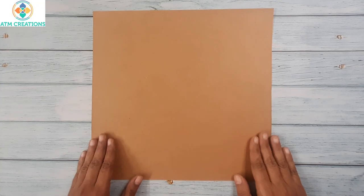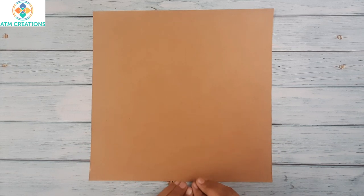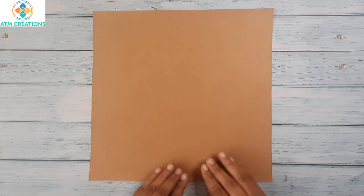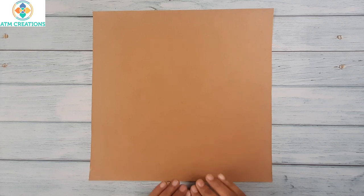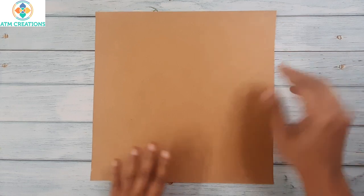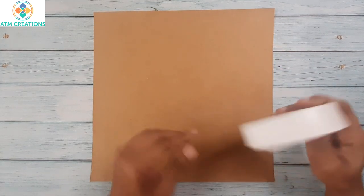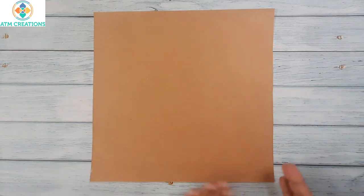Hello everyone, I welcome you all to ATM Creations. In this video I'm going to tell you how anybody can do an acrylic painting. It's a very simple one. I have taken a square-shaped brown color paper and kept it on my table. Now using this masking tape, I'm going to stick the edges of this paper onto my table.